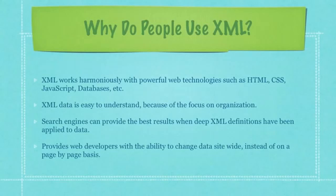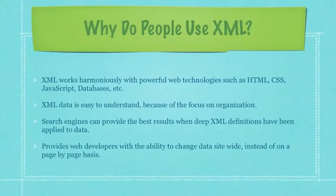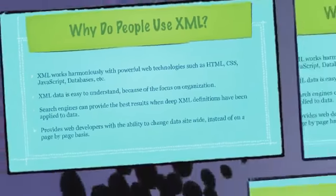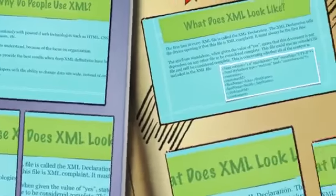It's kind of like a universal translator. Advanced XML is set up to facilitate transfer of information in multiple different languages and character sets. You can make as many different types of tags with your specified attributes as you need. The data is easy to extract from XML because it's so well organized. XML works harmoniously with powerful web technologies such as HTML, cascading stylesheets, JavaScript, databases, etc. XML data is easy to understand because of the focus on organization. Search engines can provide the best results when deep XML definitions have been applied to data.